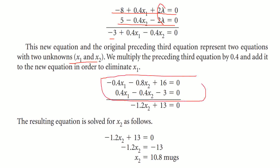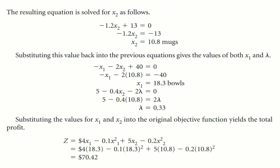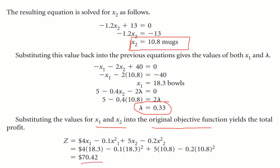After eliminating x₁, we solve for x₂. By substituting x₂, we find x₁, and by substituting x₁ and x₂ we find lambda. Substituting these values into the objective function gives us the maximum profit of 70.42.